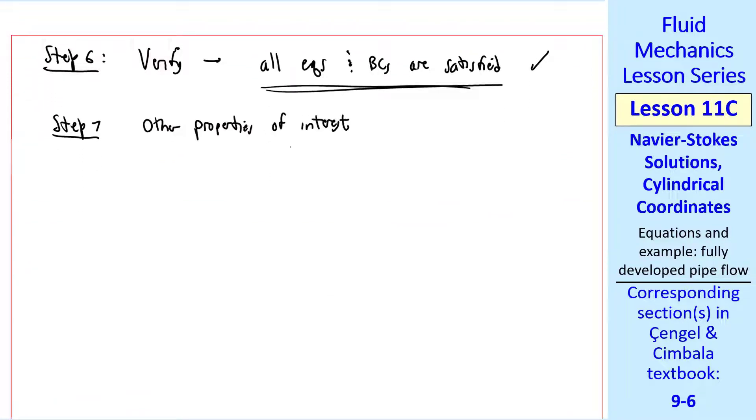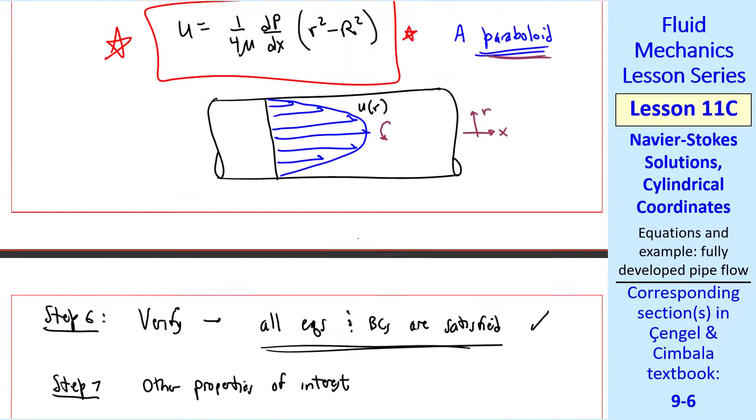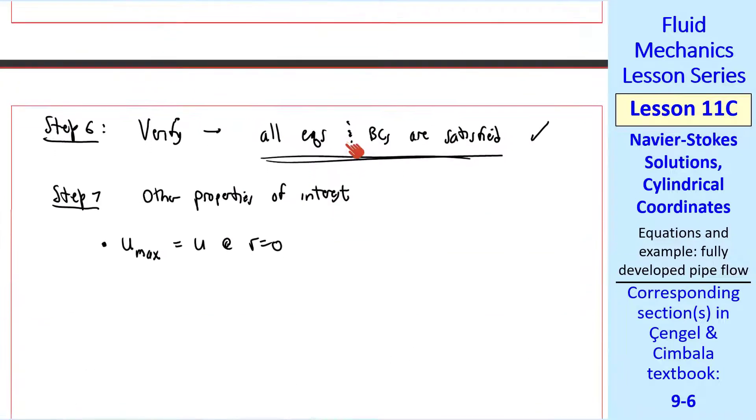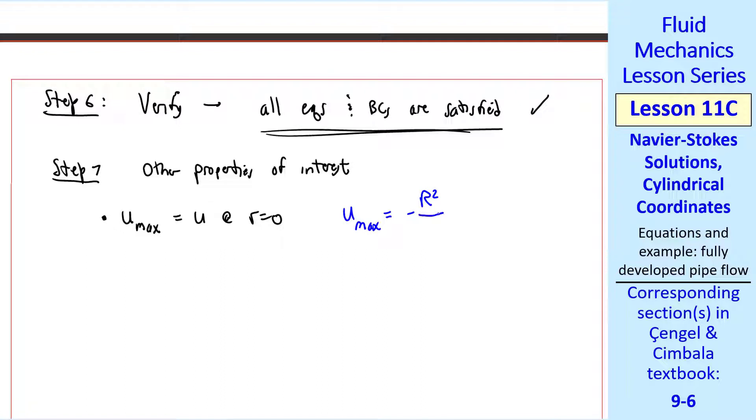Finally, step 7 is to calculate other properties of interest. For example, umax is u at r equals 0. And from our equation, we substitute r equals 0 here. We get umax is negative R² over 4μ dp/dx.